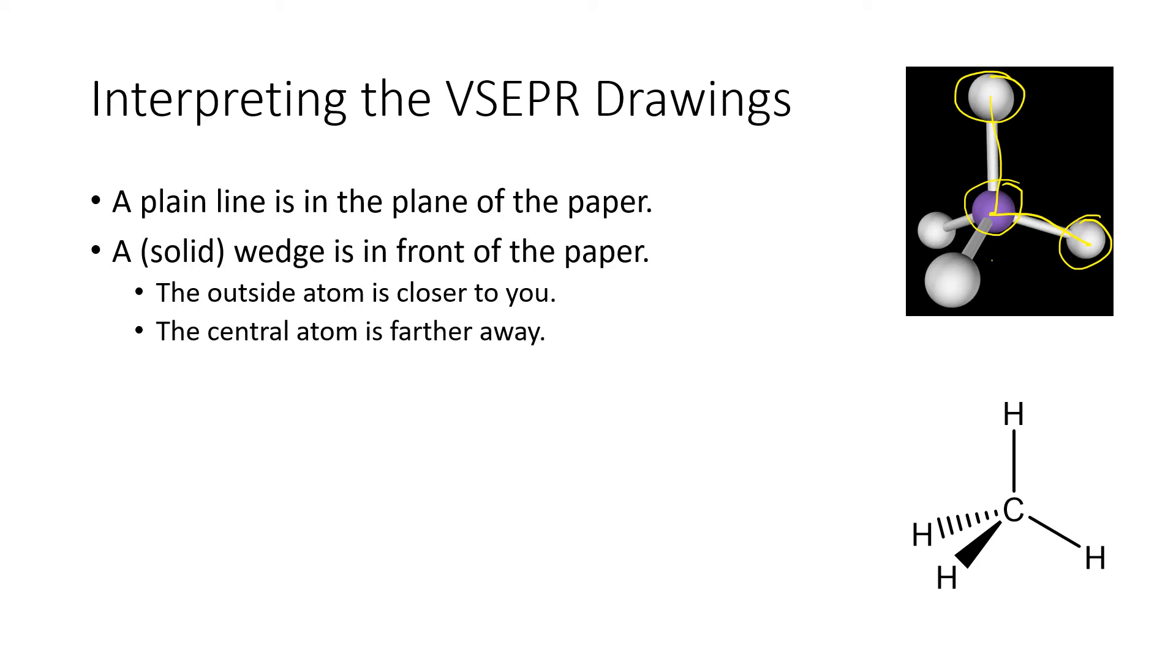If we look at our ball and stick model, that carbon atom is shown in the structure below with that wedge, so the carbon is in the plane of the paper and then the hydrogen is coming out towards you.